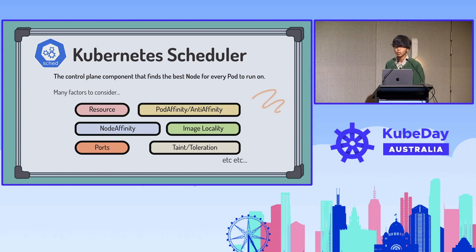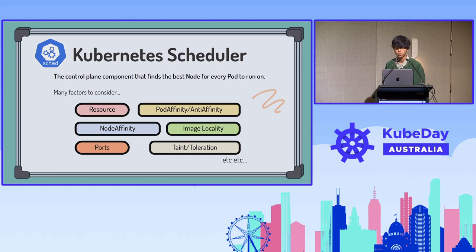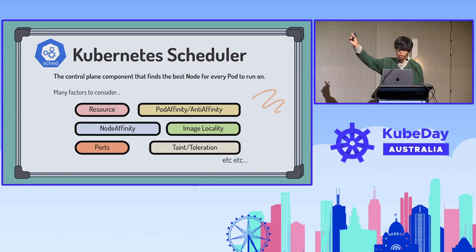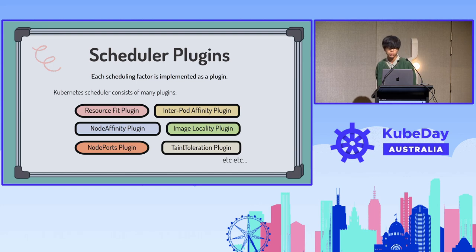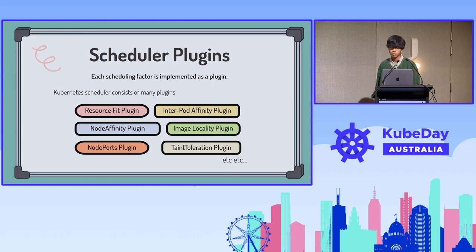Kubernetes Scheduler is one of the control plane components. It's responsible for finding the best node for each unschedulable pod. It considers a lot of factors like resource, pod affinity, node affinity, image locality, et cetera. Each of those factors is implemented as a scheduler plugin — for example, we have a resource fit plugin that is responsible for determining the node based on resource capacity.